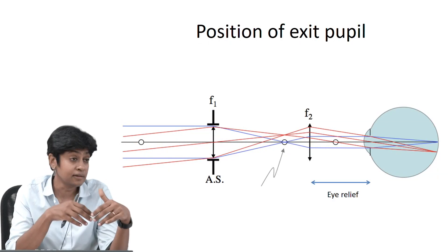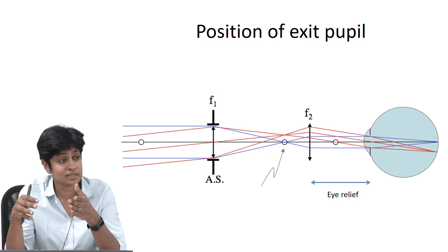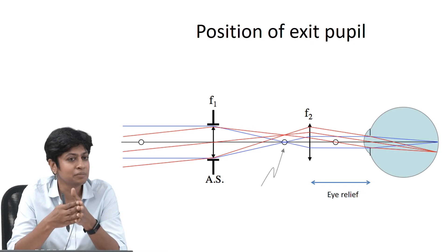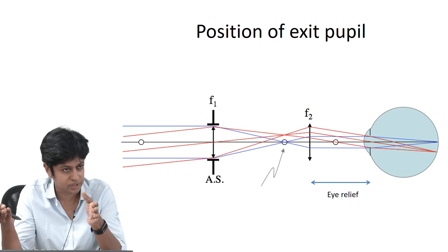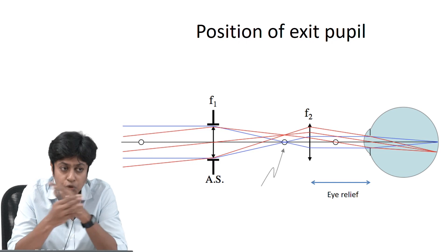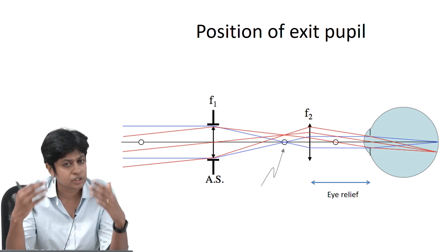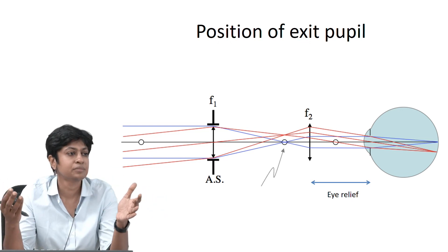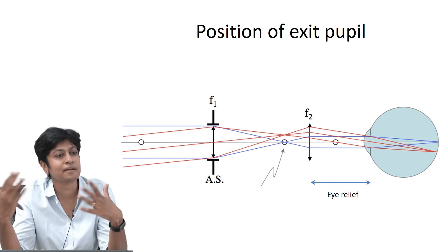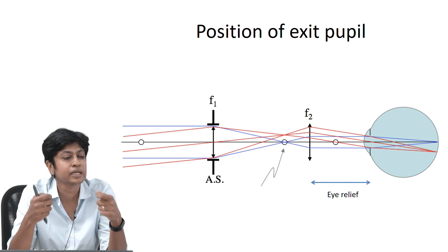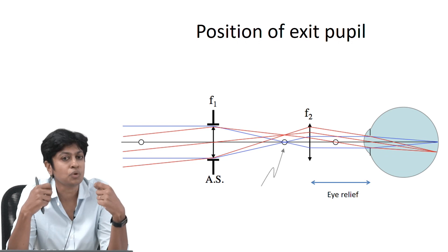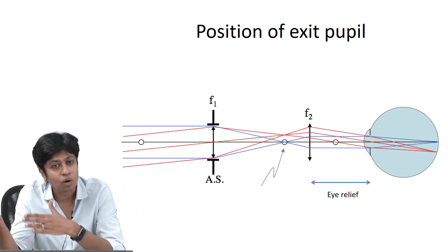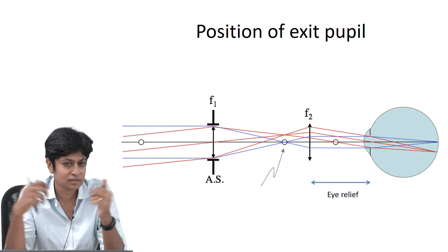We ended the class yesterday looking at the exit pupil, which is the image of the aperture stop seen through all the elements after the aperture stop. So it is very clear from that definition: if you do not have any elements after the aperture stop, the aperture stop itself will be the exit pupil. But given that there are elements, you find the location of the image and that becomes the exit plane. For applications where you as a user are going to look into your system, the exit pupil must lie outside the entire system.